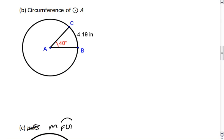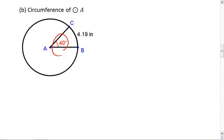Let's look at example B. I want to find the circumference of circle A. I'm given the degrees, so I'm going to set up that ratio first. I have 40 to 360. I then have the arc length, which is 4.19, and I want to find out the circumference. I can cross multiply.